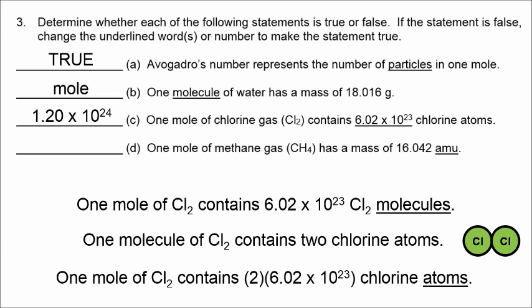And then finally, we do use AMUs for small materials, but this says one mole. So, it's going to be 16.042 grams equals one mole of methane gas.